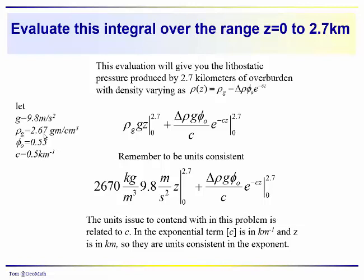So we have g is equal to 9.8 meters per second squared. The grain density, or the matrix density, 2.67. The porosity at the surface, 0.55. And this constant, now take a look at this. We have to have a dimensionless power up here. So this has units of kilometers. This has to have units of inverse kilometers, because we're multiplying it times kilometers. We have to get rid of the units. So it's important to be units consistent here. Just taking a look at the first term, we get 2,670. So our 2.67 becomes 2,670 kilograms per cubic meter. We're okay here, we're consistent.